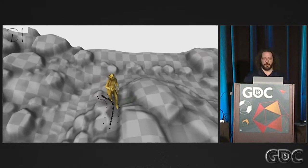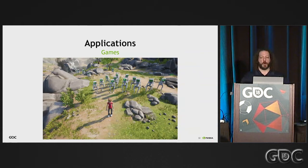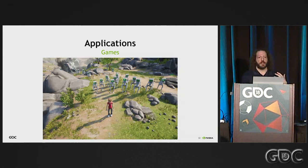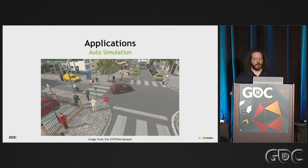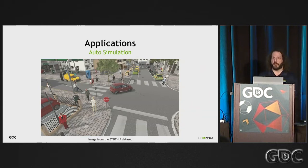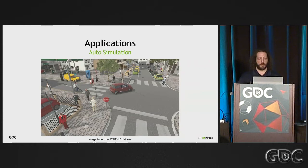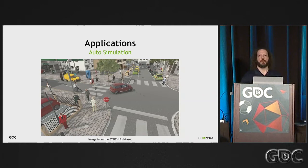What kind of applications can we have? Games is one. But there are many others — some of the work my Toronto team does sits at the crossover between gaming and other AI applications. One is simulating crowds. Another, especially given unfortunate news this week, is auto-simulation: if you're training a neural network to drive a car, it's critically important to simulate that network before deploying it in a vehicle. Having a really good model for how human pedestrians move is obviously critical.